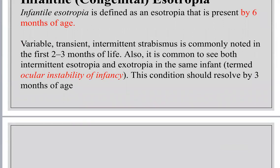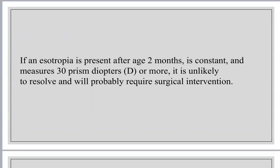You should differentiate between esotropia, which is true strabismus, and ocular instability of infancy. A child with no fovea has no fixation, so his eyes will move outward or inward — this is called ocular instability. After the age of two months, you can differentiate between them. If the angle is constant and more than 30 prism diopters, this is likely infantile esotropia.